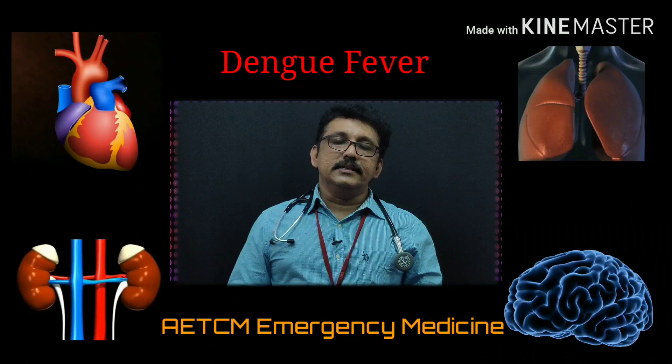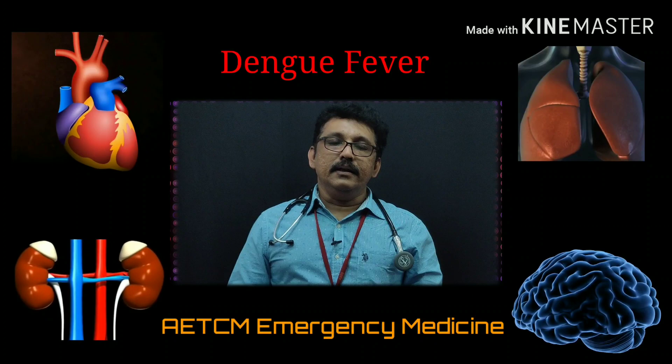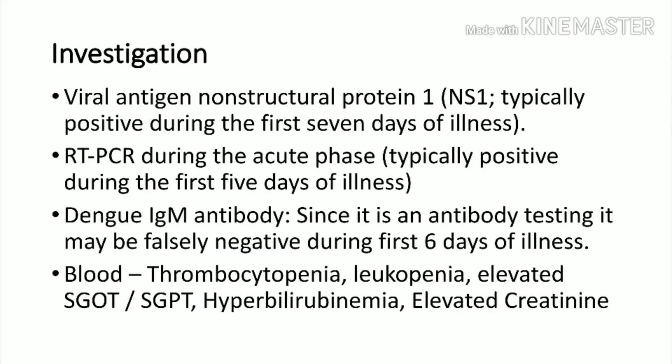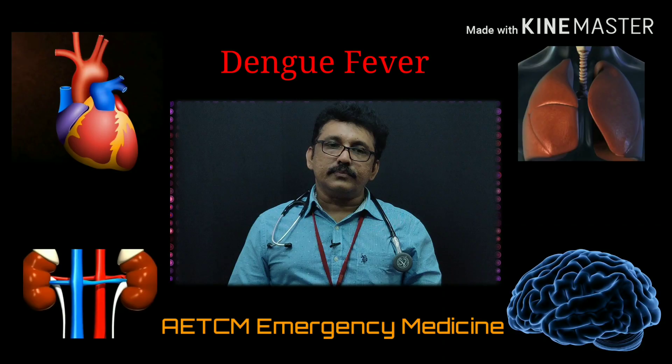For dengue-specific diagnosis, during the first week we do NS1 antigen, which is an antigen on the dengue virus that is positive in early phases. After 7 days or in the later phase, dengue IgM antibody becomes positive. So the two most important tests are NS1 antigen and dengue IgM antibody. RT-PCR can also be done but is not available in many centers.